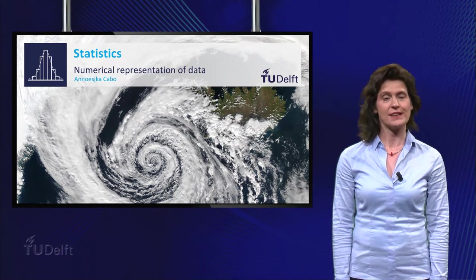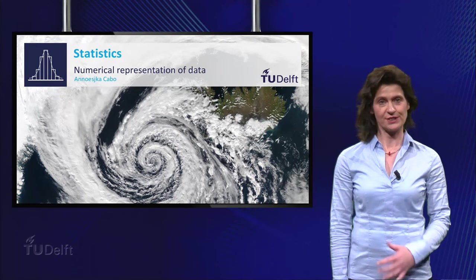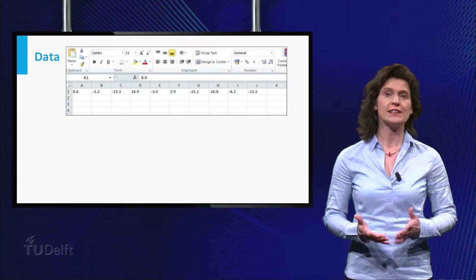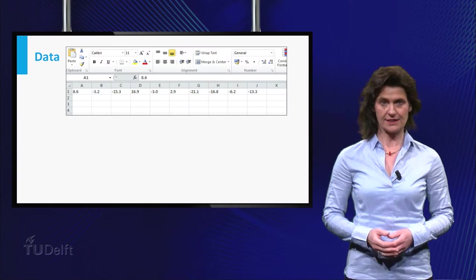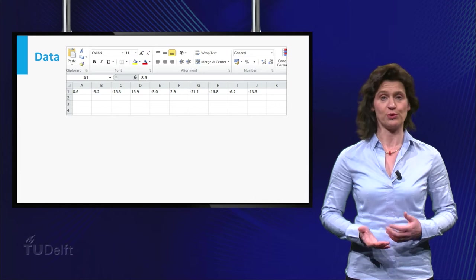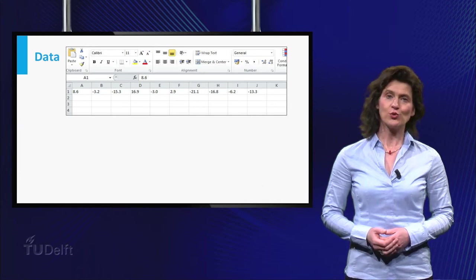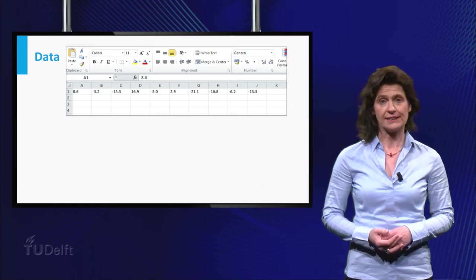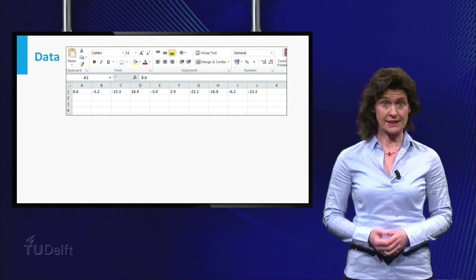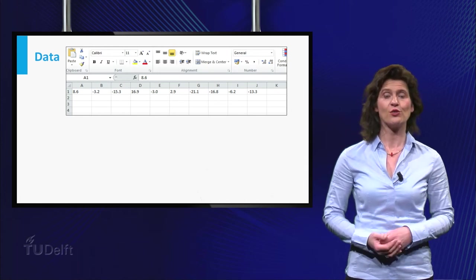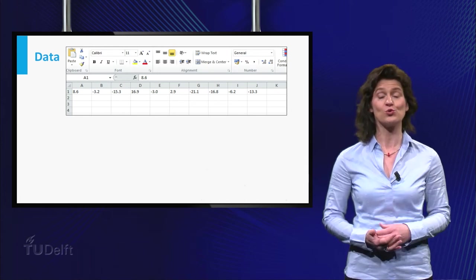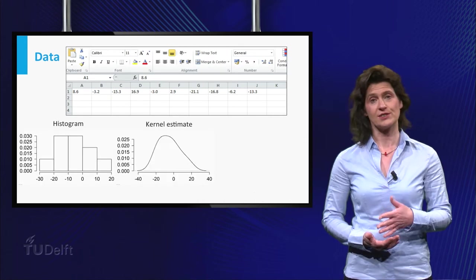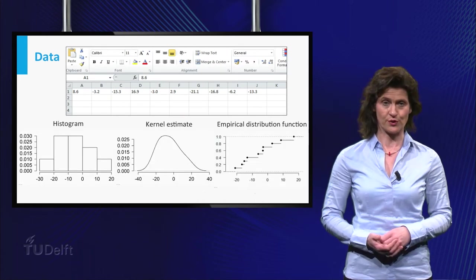In statistics we want to make statements based on certain data. Usually the data are collected in a dataset and stored in a spreadsheet on the computer. Before doing possibly complicated things with the data, it is wise to inspect the data. In the previous video you have seen various methods to do this graphically, the histogram, the kernel estimate and the empirical distribution function.